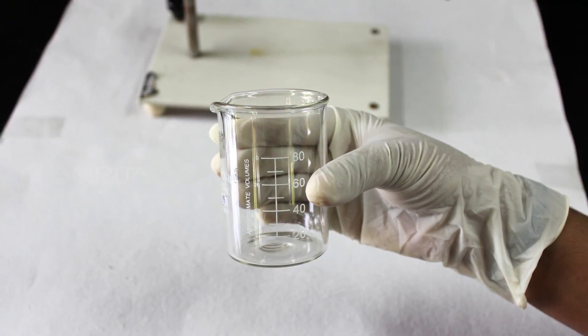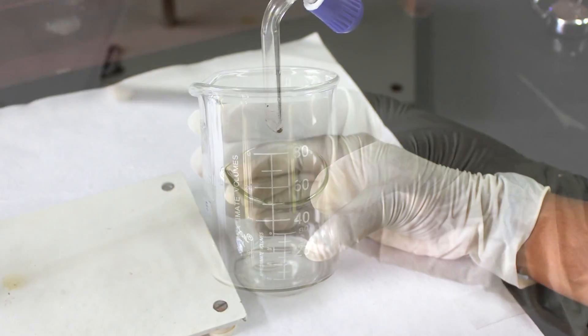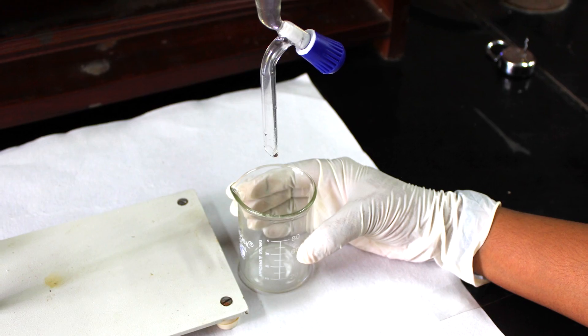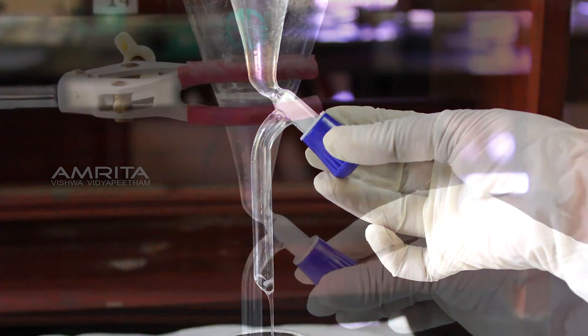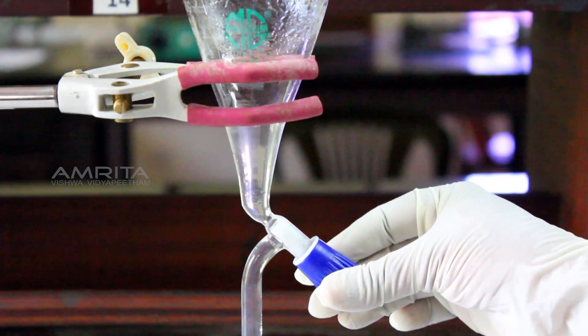Take another beaker and place it below the separating funnel. Open the stop cock and now collect oil from the separating funnel.